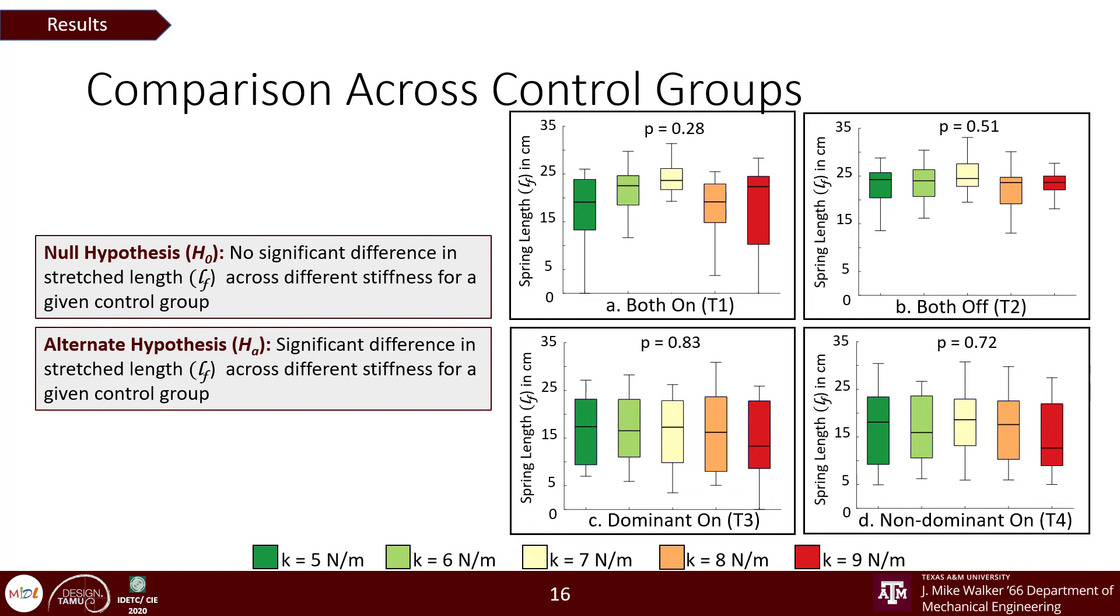However, for both devices on and both devices off condition, participants pulled for longer lengths, about 23 centimeters on an average, to identify any asymmetry, again conforming presence of symmetric motions both in presence and absence of force, which is an interesting phenomenon. Also, the single device active conditions made it relatively easier to perceive kinesthetic asymmetry at lower forces across all stiffness values.